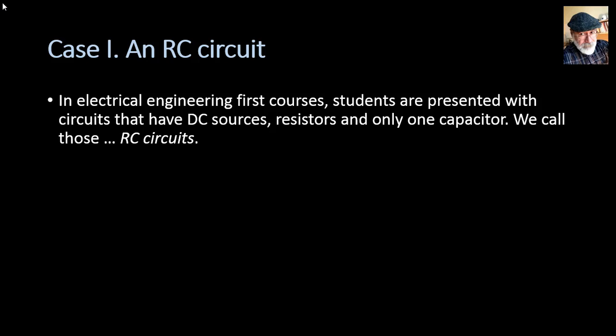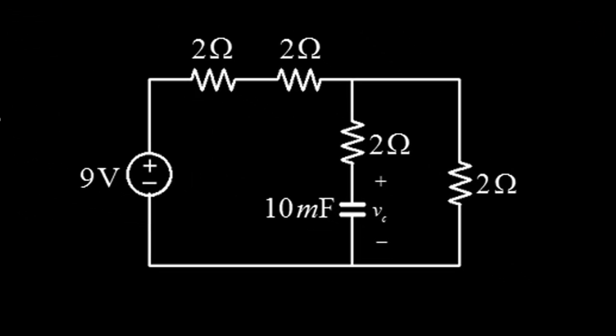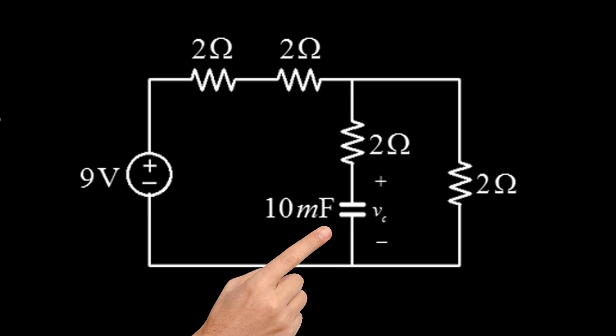In electrical engineering first courses, students are presented with circuits that have DC sources, resistors, and only one capacitor. We call those RC circuits. The question in this tutorial is: for the circuit on the right, find the differential equation whose solution is the voltage VC in the capacitor.